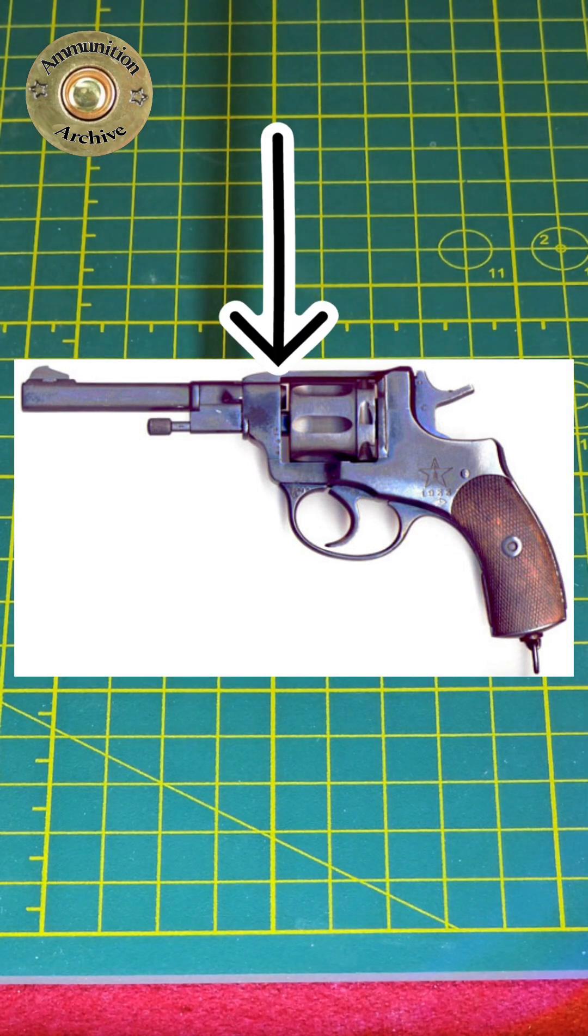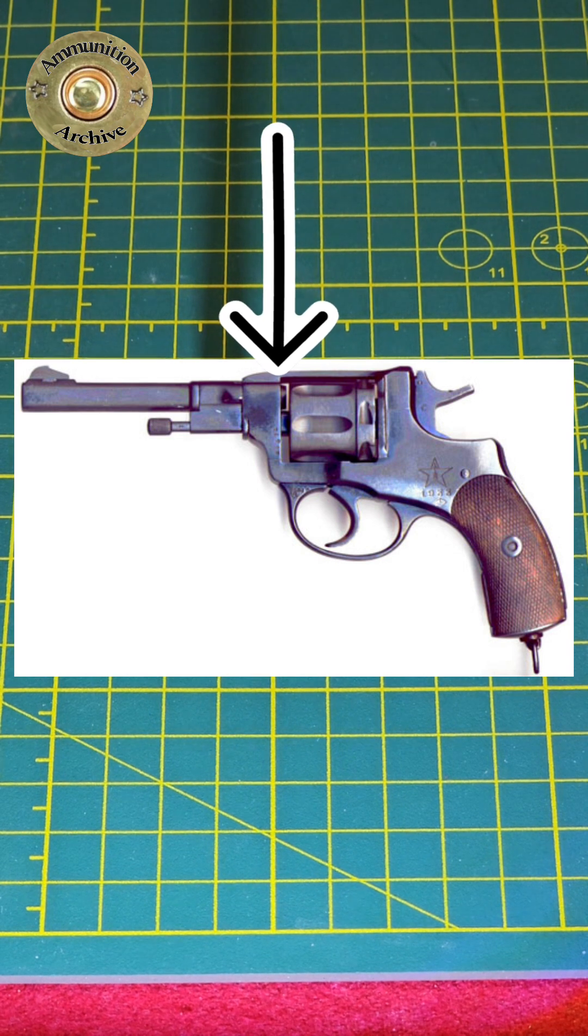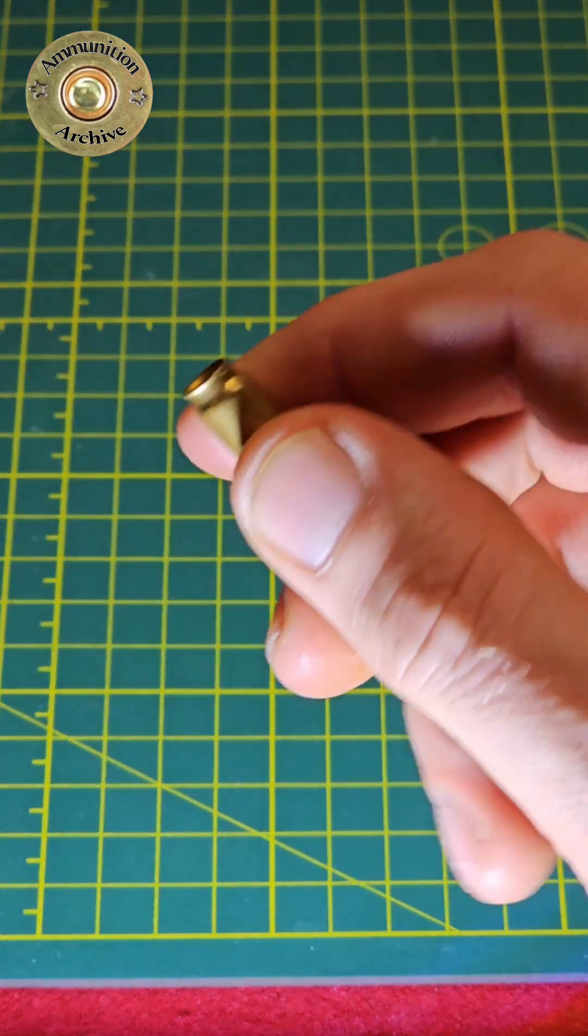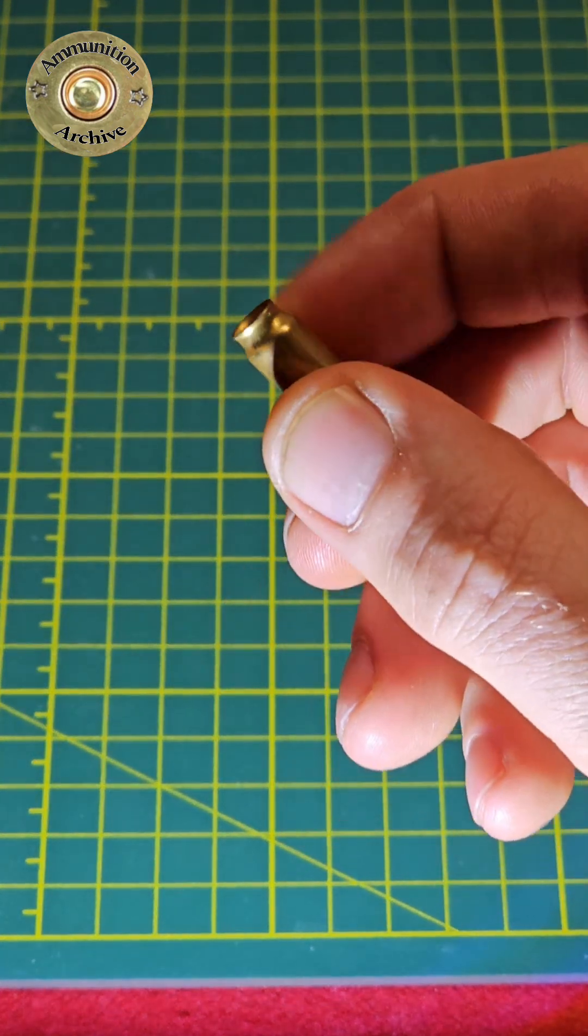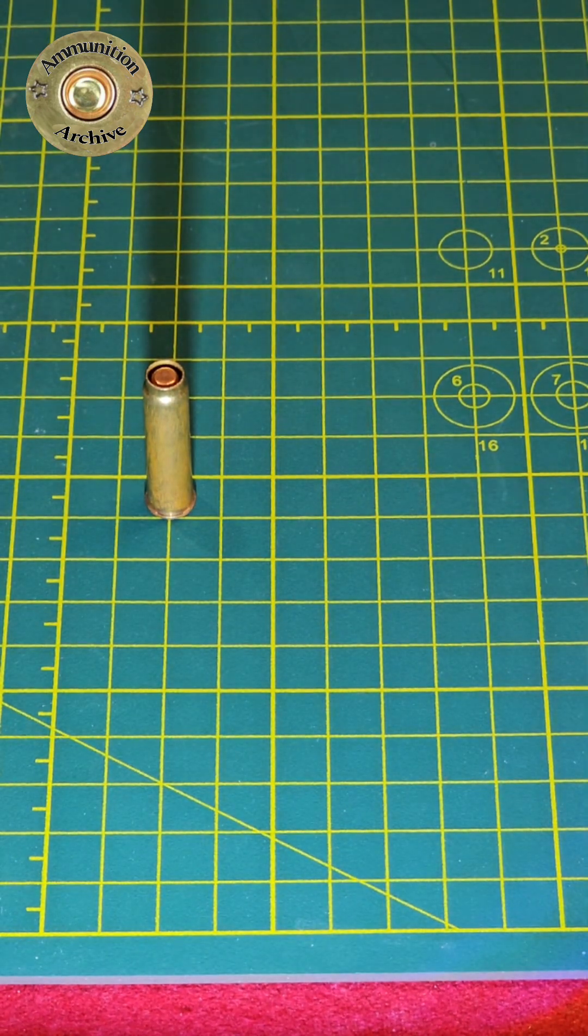So you can see here, this little gap. When the trigger is pulled, the cylinder is pushed ahead, and this gap will actually disappear. And this part of the cartridge here will seal into the forcing cone, allowing it to actually be suppressed. One of very few revolvers that can actually be suppressed.